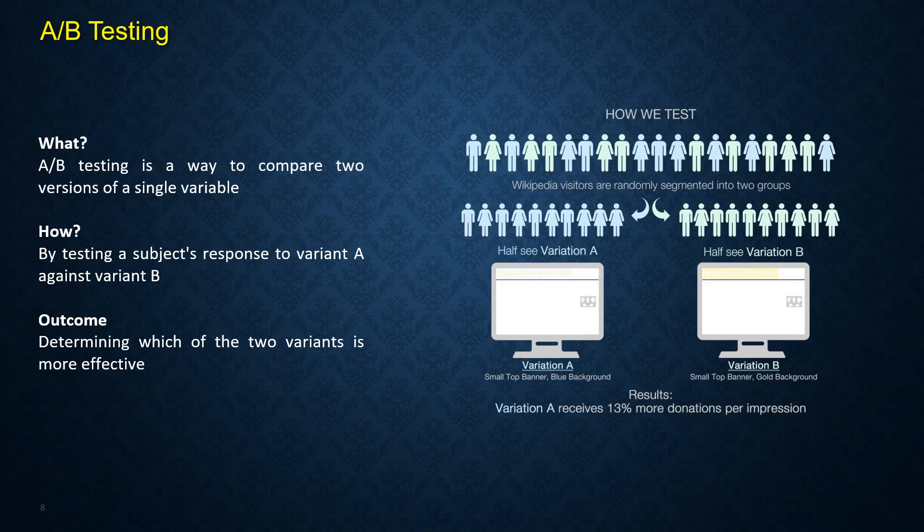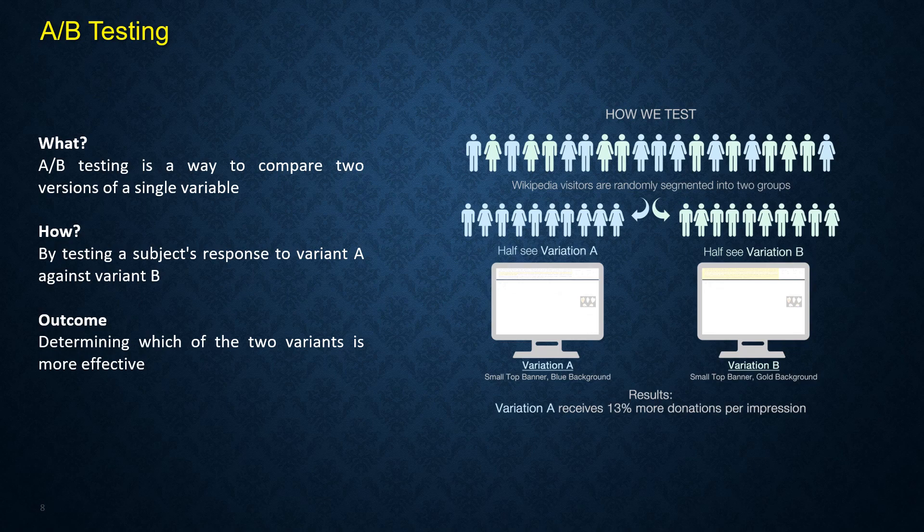A-B testing is a way to compare two versions of a single variable. Large social media sites like LinkedIn, Facebook, and Instagram use A-B testing to make user experience more successful and as a way to streamline their services.